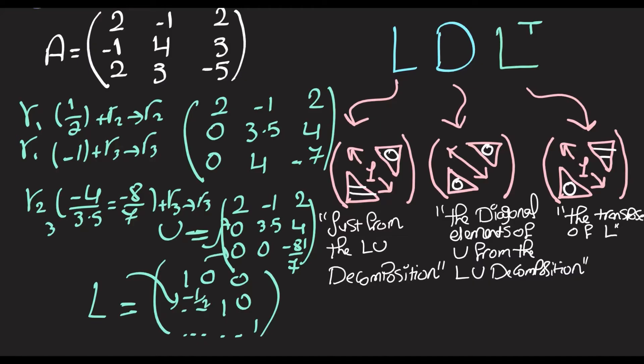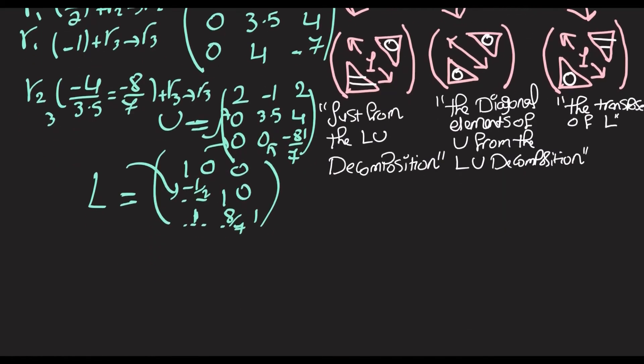Then we look here, we multiply by negative 1, so there's gonna be 1. We look here, we multiplied by negative 8 over 7, so that's gonna be 8 over 7.